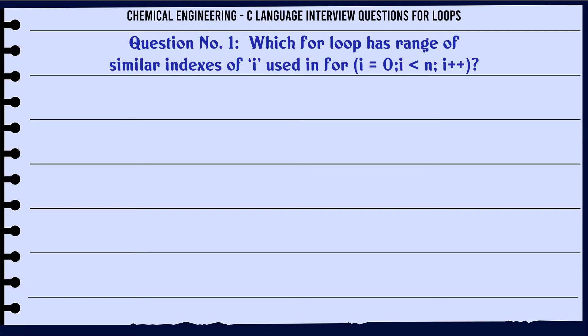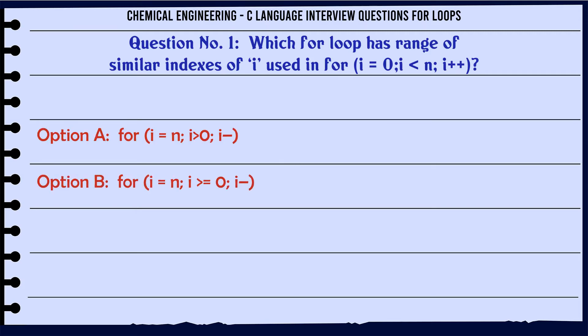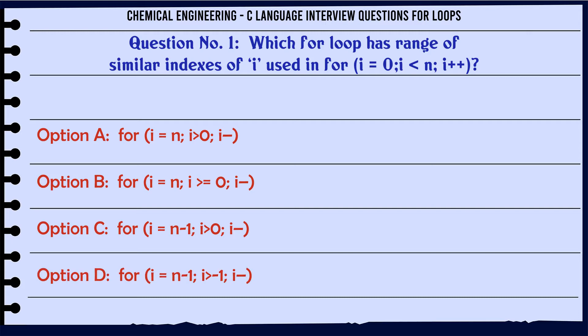Which for loop has a range of similar indexes as used in `for(i=0; i<n; i++)`? A: `for(i=n; i>=0; i--)`. B: `for(i=n; i>=0; i--)`. C: `for(i=n-1; i>=0; i--)`. D: `for(i=n-1; i>=1; i--)`.